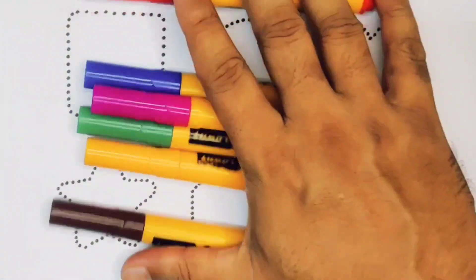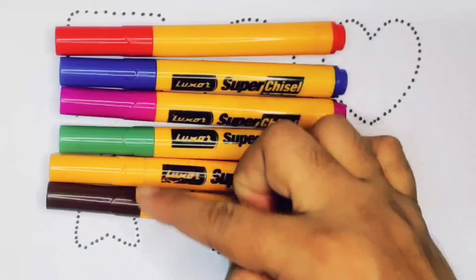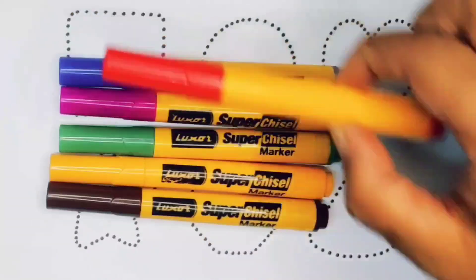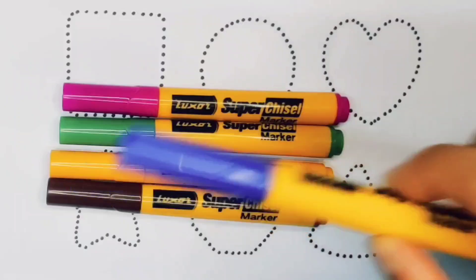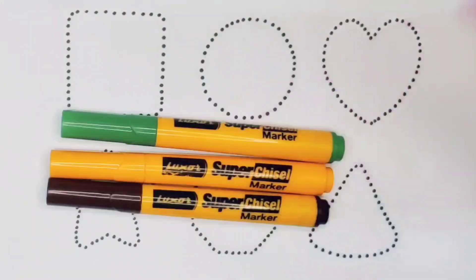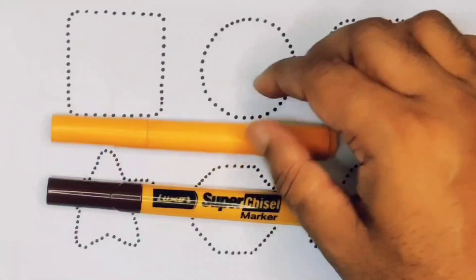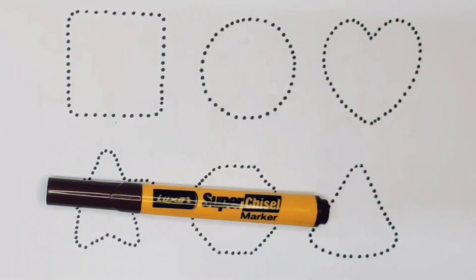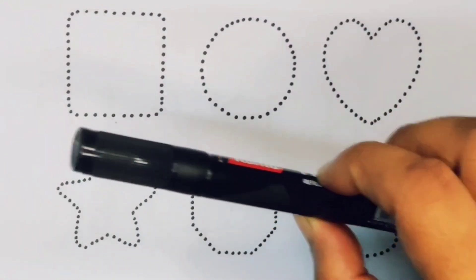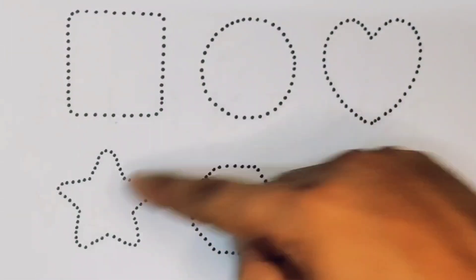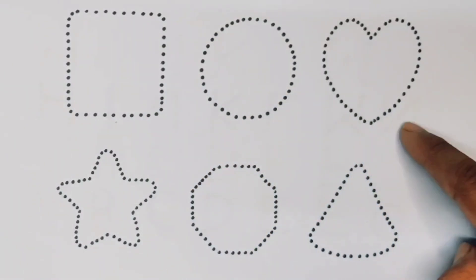Hello kids, welcome to my new video. First we're going to know the color names: red, blue, pink, green, yellow, chocolate, and black. Now let's learn the 2D shapes: square, circle, heart, star.